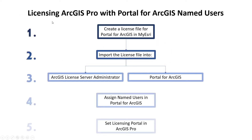In terms of the steps we are going to be following today: first, we are going to create a license file in My Esri. That license file we will then import into two locations — into the license server administrator and into Portal for ArcGIS. We will then assign named users in Portal for ArcGIS to specify which user is actually going to have access to ArcGIS Pro. And last but not least, we will log into ArcGIS Pro and specify the licensing portal so that the users are able to pick up that license.